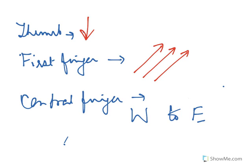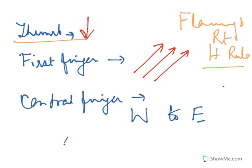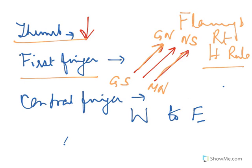For the second part — the direction of the EMF — we apply Fleming's right-hand rule. Since the wire is falling down, the thumb of our right hand points downwards. The first finger should point from magnetic north to magnetic south. The central finger will then be pointing towards east, so the direction of the EMF will be from west to east.